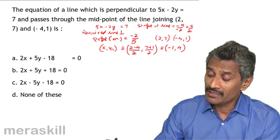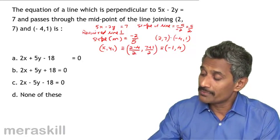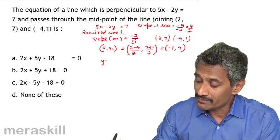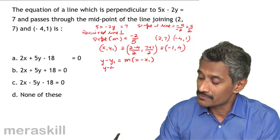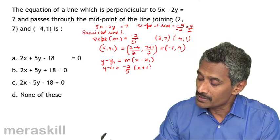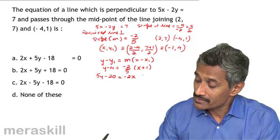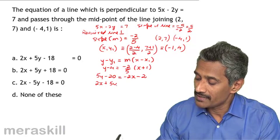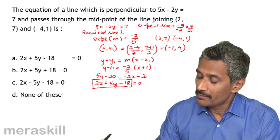The required line has slope minus 2 by 5 and passes through the midpoint minus 1 comma 4. Its equation is y minus y1 equals m into x minus x1, giving y minus 4 equals minus 2 by 5 into x plus 1. Cross multiplying: 5y minus 20 equals minus 2x minus 2. Rearranging gives 2x plus 5y minus 18 equals 0.